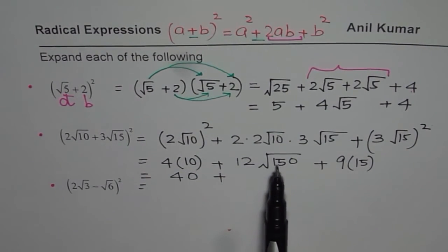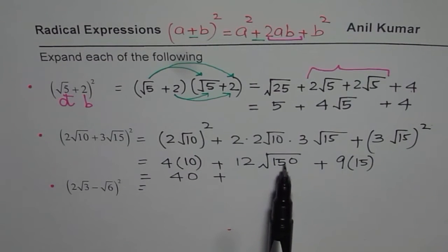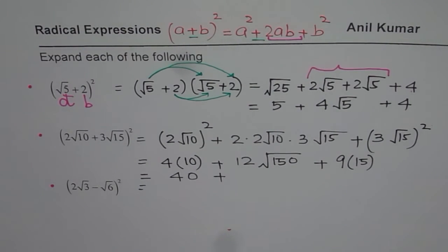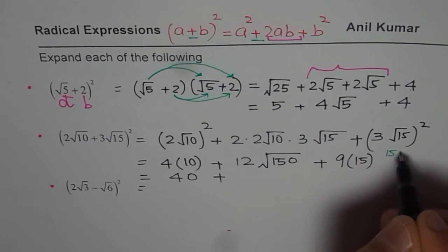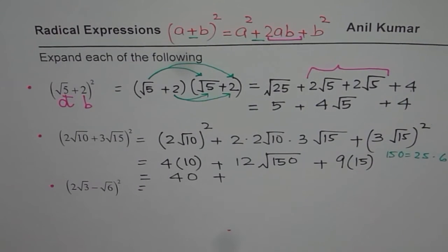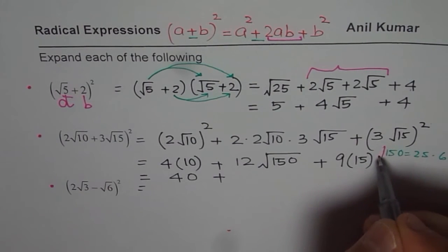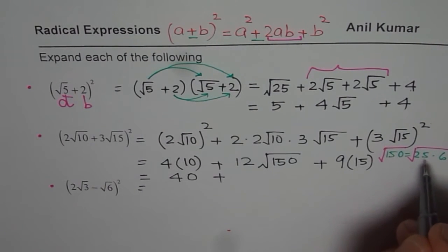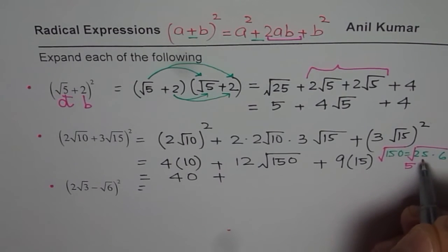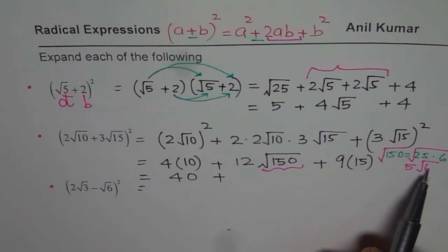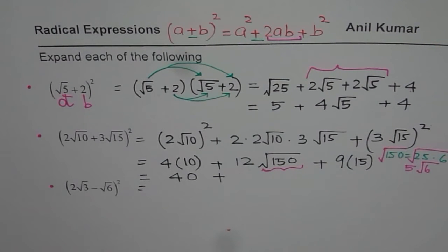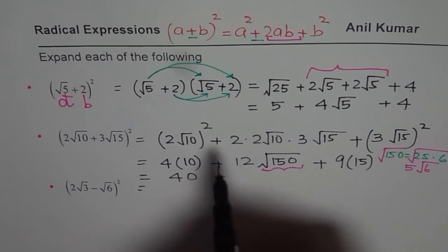At times you can simplify radicals by taking out perfect square factors. √150 can be written as √(25 × 6), and since √25 = 5, we write 5√6. So 12√150 becomes 12 × 5√6 = 60√6. Then 9 × 15 = 135, and 40 + 135 = 175. The result for the second expression is 175 + 60√6.